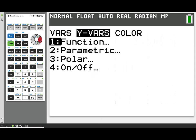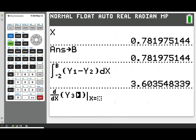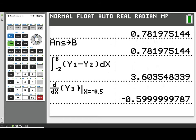So I'll take the derivative with respect to x of this y3, which is our y1 minus y2. We're going to evaluate that derivative at x equal negative 0.5. We can see that our value is approximately negative 0.6. The sign being negative tells us that distance is definitely decreasing.